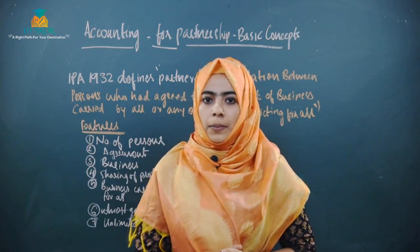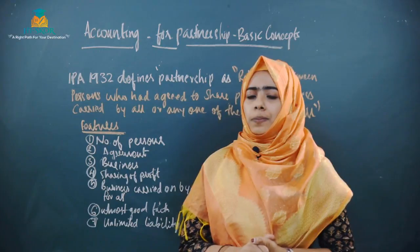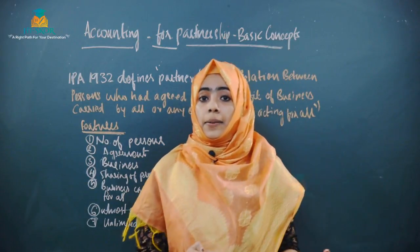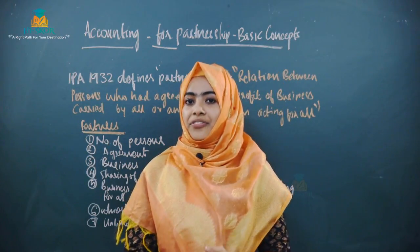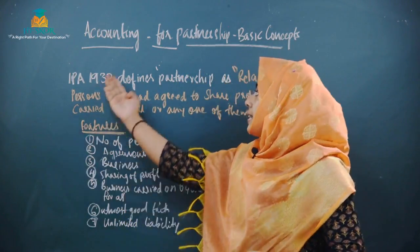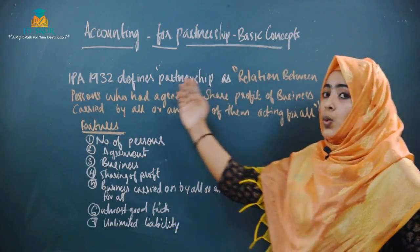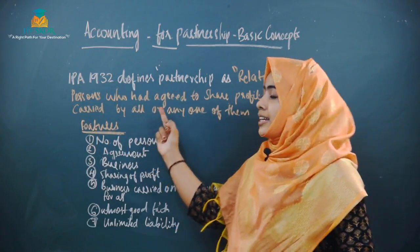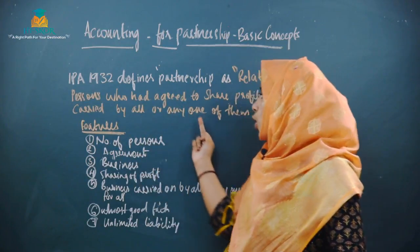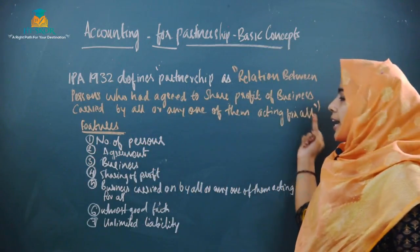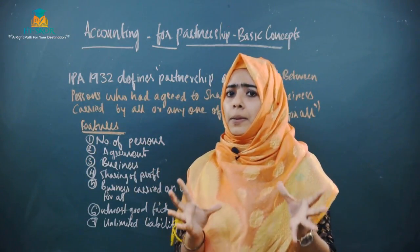What is partnership? The Partnership Act 1932 defines partnership as the relation between persons who have agreed to share the profit of a business carried on by all or any one of them acting for all.